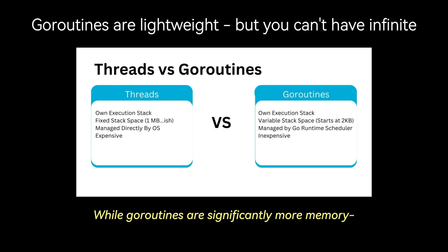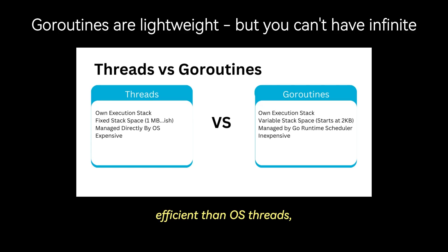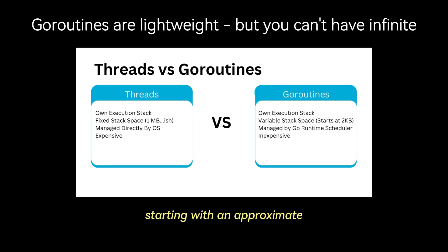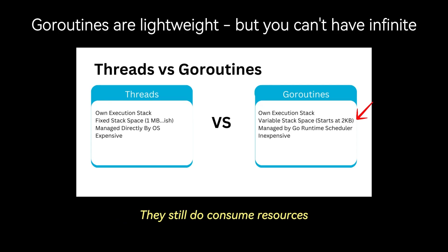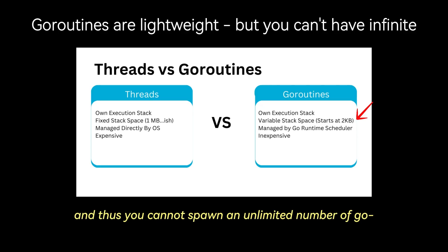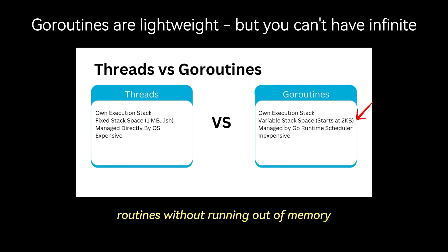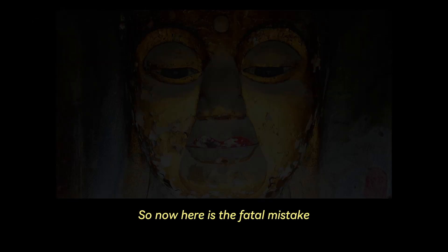While goroutines are significantly more memory efficient than OS threads — starting with an approximate 2 kilobyte stack that grows dynamically — they still consume resources, and thus you cannot spawn an unlimited number of goroutines without running out of memory.